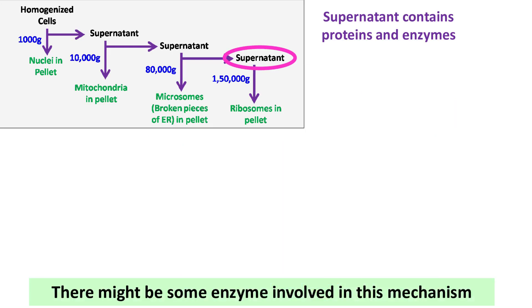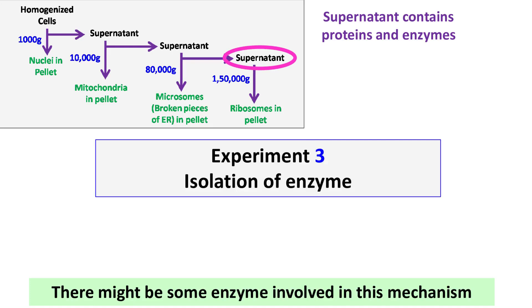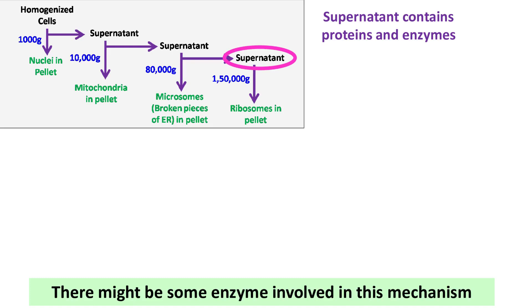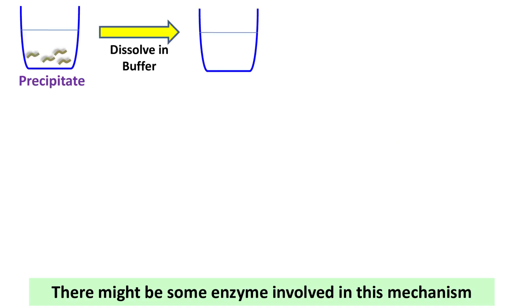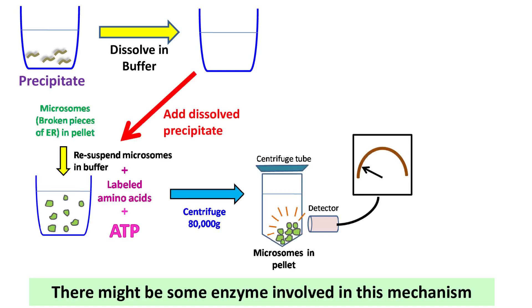To find this enzyme, they started precipitating proteins and enzymes from the supernatant by various methods. They found that when the pH of the supernatant was decreased to 5, a precipitate was obtained.